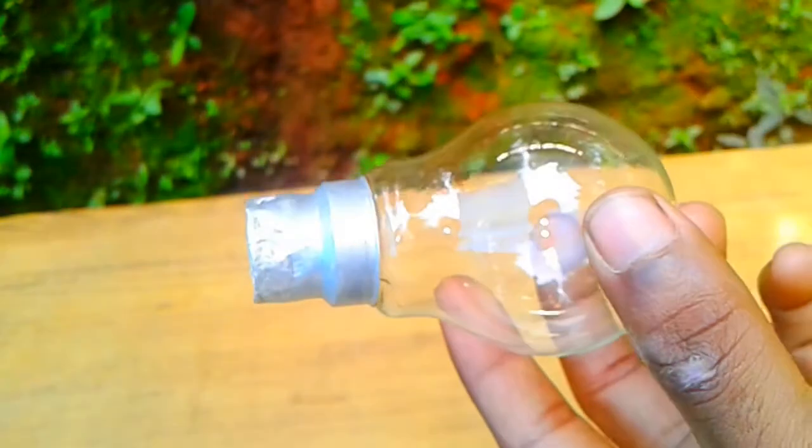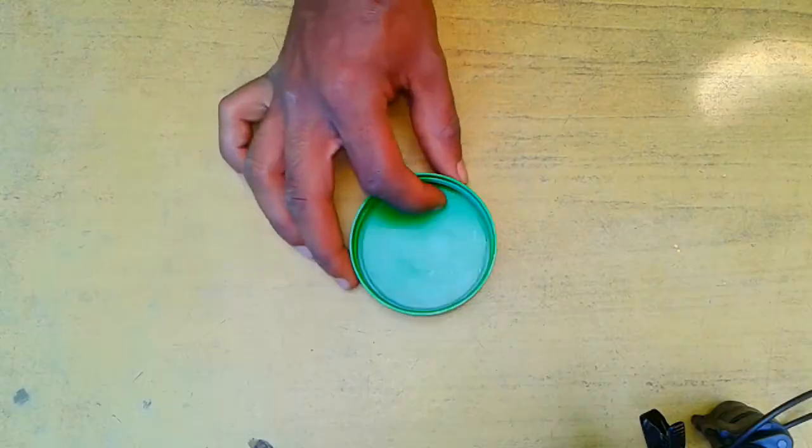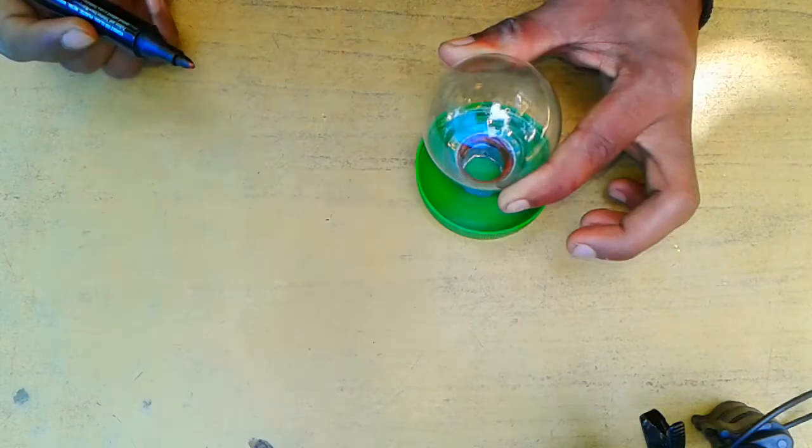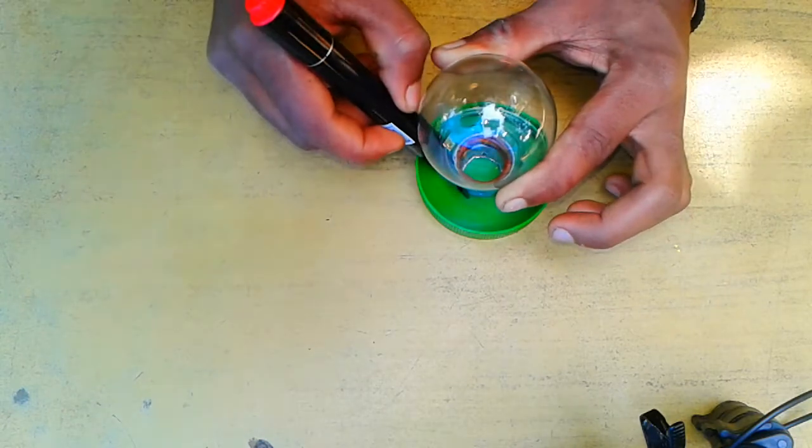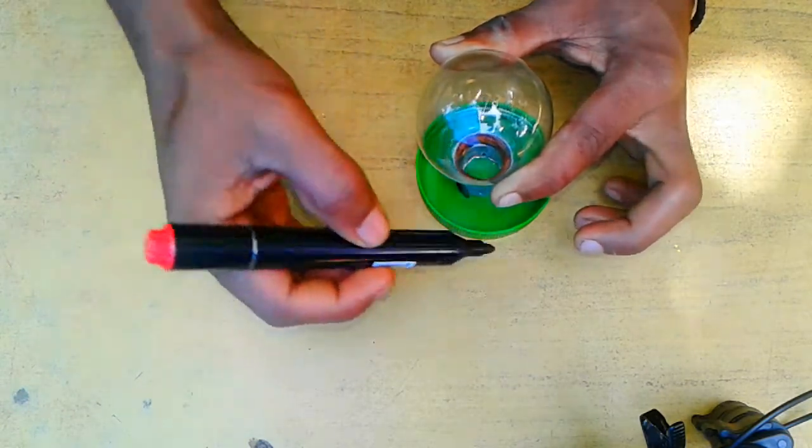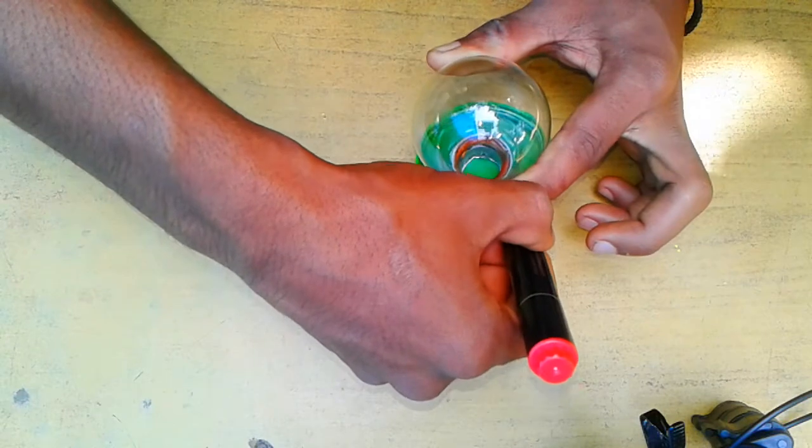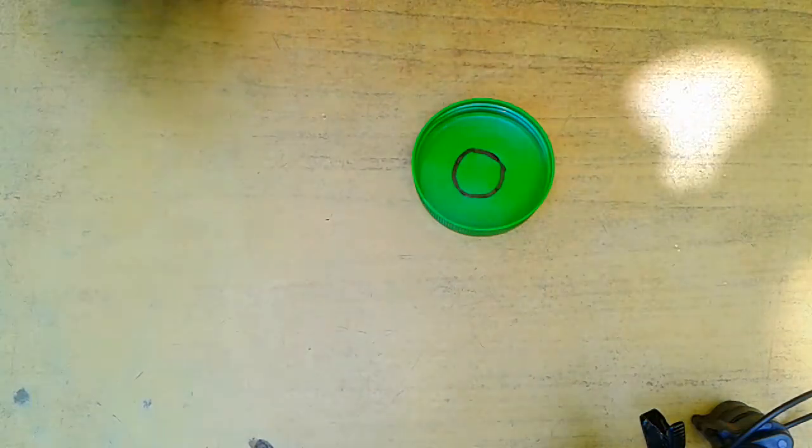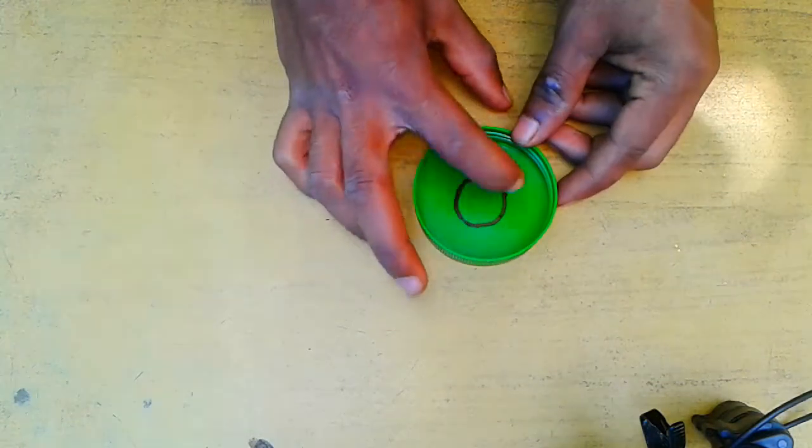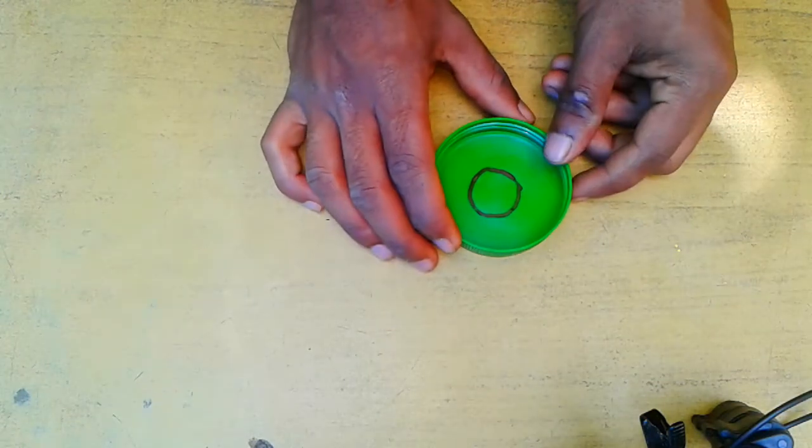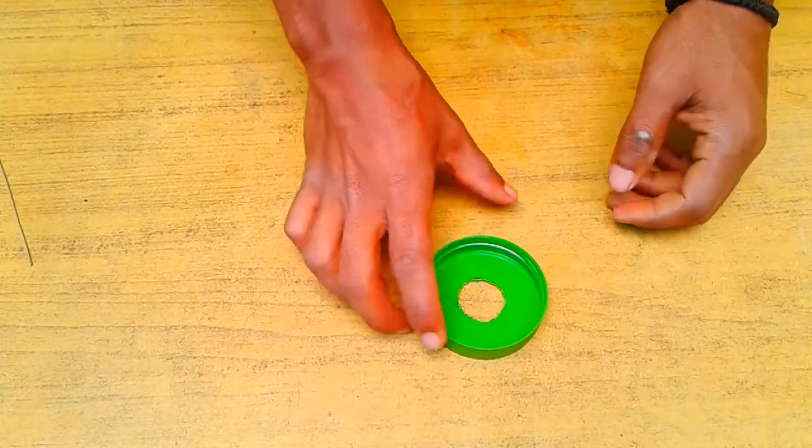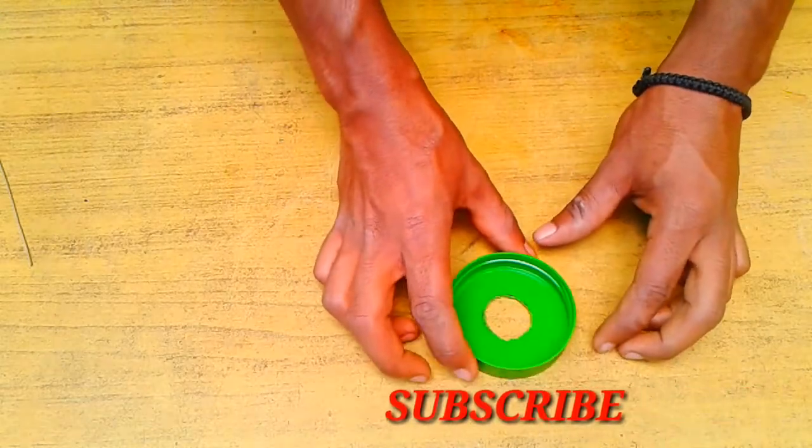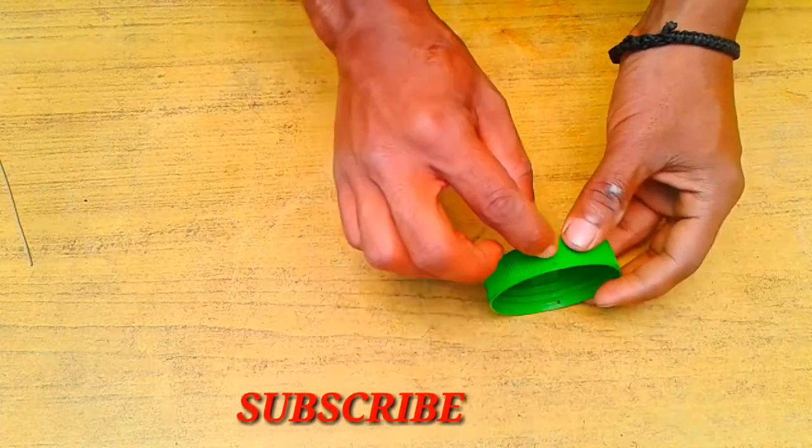I want to make a wooden holder for this. We need to mark the center using a marker, and we'll make two holes on the sides.